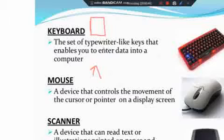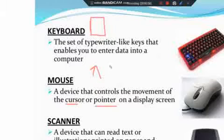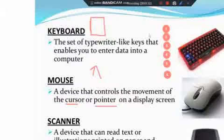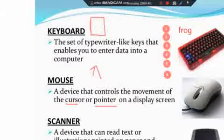Next is the mouse. You can see this pointer which is moving on the screen — we call it the cursor or pointer. A mouse is a device that controls the movement of the cursor or pointer on a display. This is the input device.